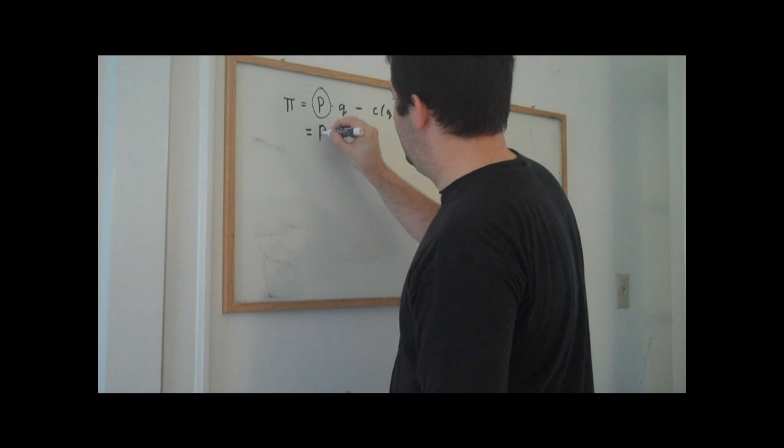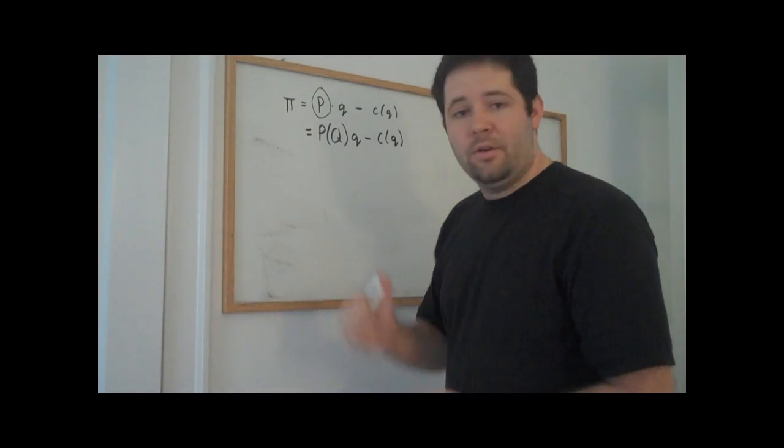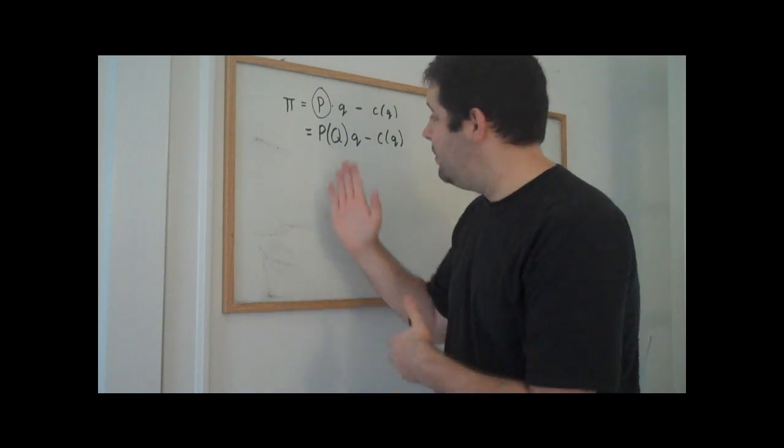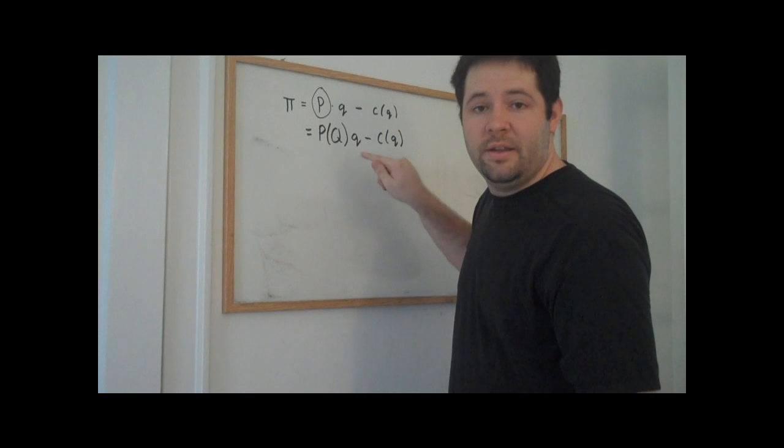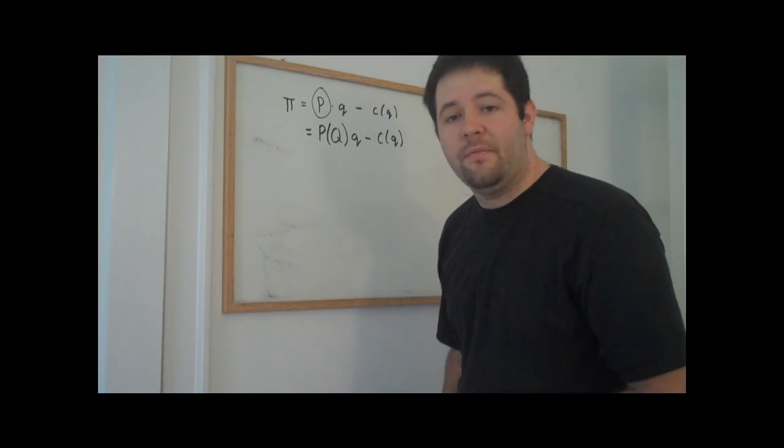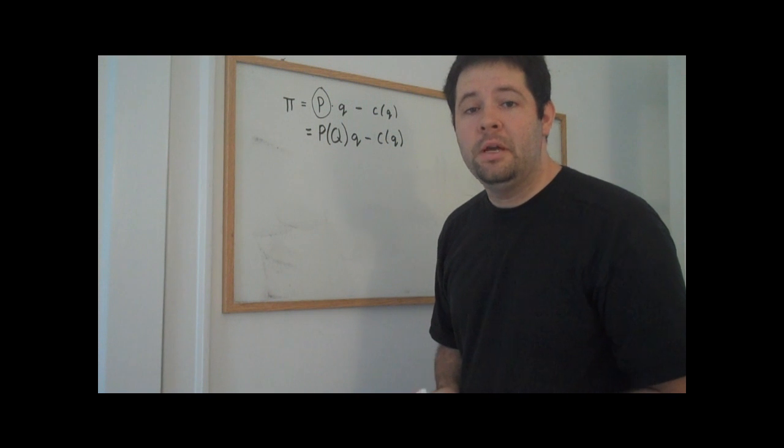We're going to think of the quantity that goes into the inverse demand curve as the market quantity, and the quantity that is out here is going to be the quantity that the firm actually produces, because that's actually what this firm can profit from.